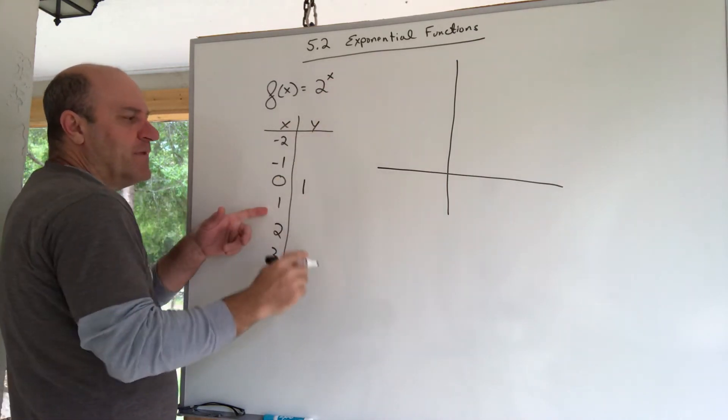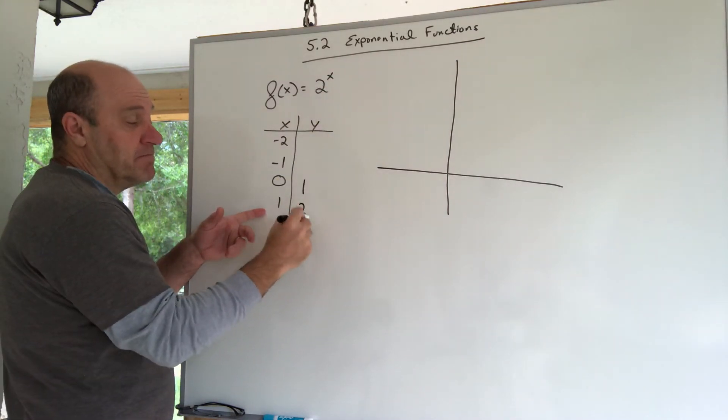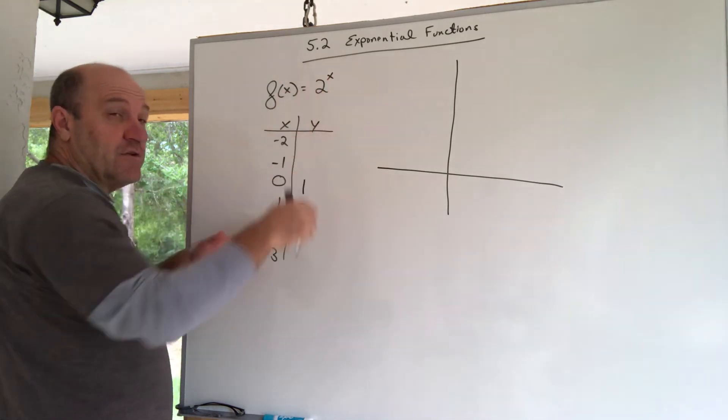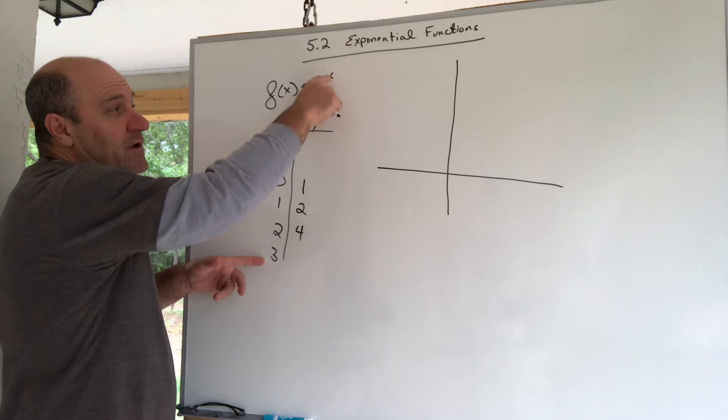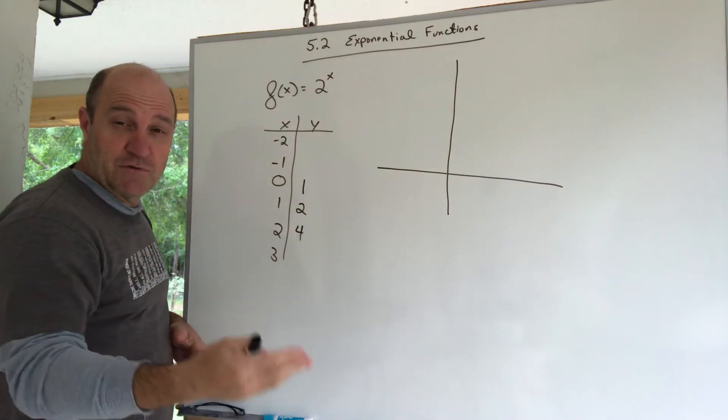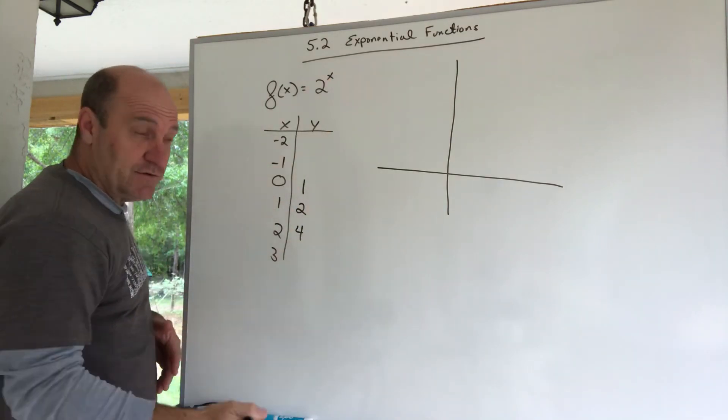Let's keep going. When you plug in a one, you get 2 to the first, that's two. When you plug in a two, you get two squared, that's two times two, that's four. When you plug in a three, you get two cubed, two times two times two is eight.